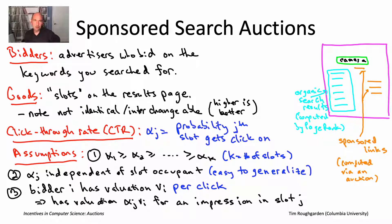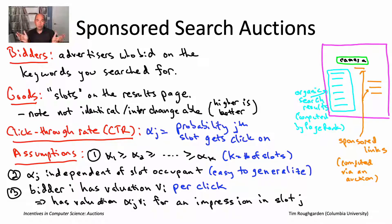That concludes the basic setup of sponsored search auctions. It's an auction where we're not selling just one thing but some number K of things — K slots, like K equals four here on the slide. The auction is responsible for figuring out which advertisers get those K slots and what they should pay for them. This is a more complicated problem than a single item auction, but ideally we'd like an analog of the Vickrey auction for this more general sponsored search setting. That's what we'll get into next.